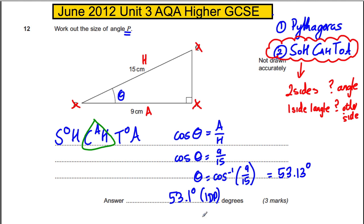You will get 53.13 degrees. It doesn't say what to round to, so just say 53.1 degrees to 1 decimal place and you're done. Think: does that look reasonable? It's between 0 and 90 and it looks like it could well be true, so we'll move on.